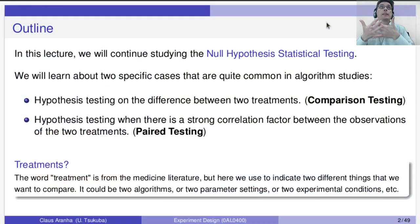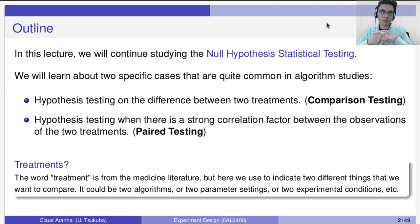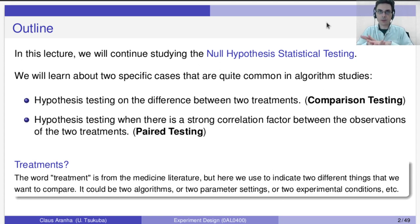In this lecture we're going to continue the topic that we started last week, that is null hypothesis statistical testing. We will learn about two specific cases that are very common in experiments, especially when studying algorithms: hypothesis testing on the difference between two treatments, which we'll call comparison testing, and hypothesis testing when there is a strong correlation factor between observations of the two treatments, which is pair testing.